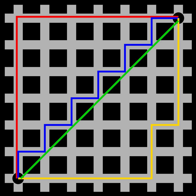In mathematics, a metric or distance function is a function that defines a distance between each pair of elements of a set. A set with a metric is called a metric space. A metric induces a topology on a set, but not all topologies can be generated by a metric.